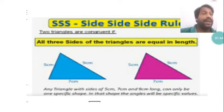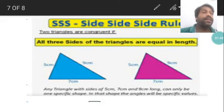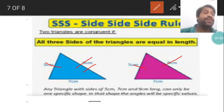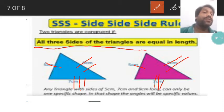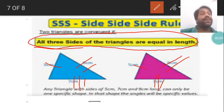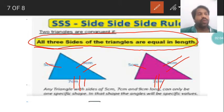We also have the triple S rule — that means side side side. In this, this side is equal to this side, this side is equal to this side, and this side is equal to this side. That means all three sides of the triangle are equal in length. This is called the side side side rule.